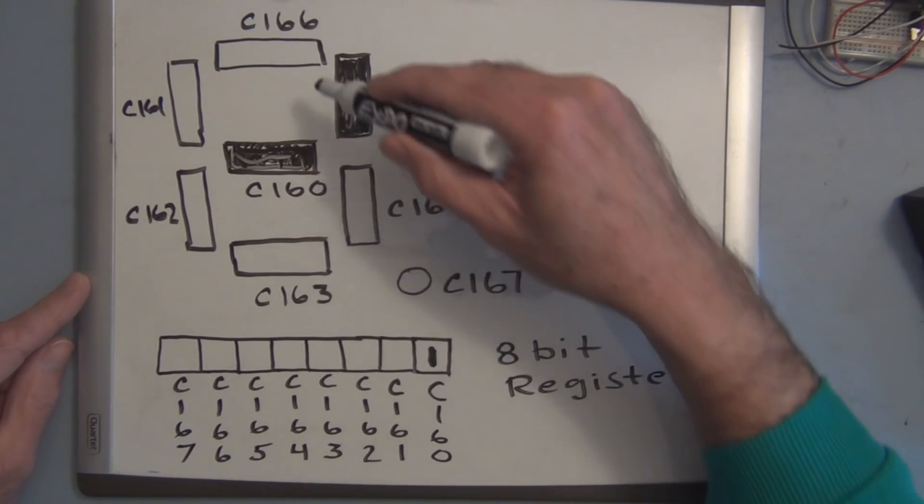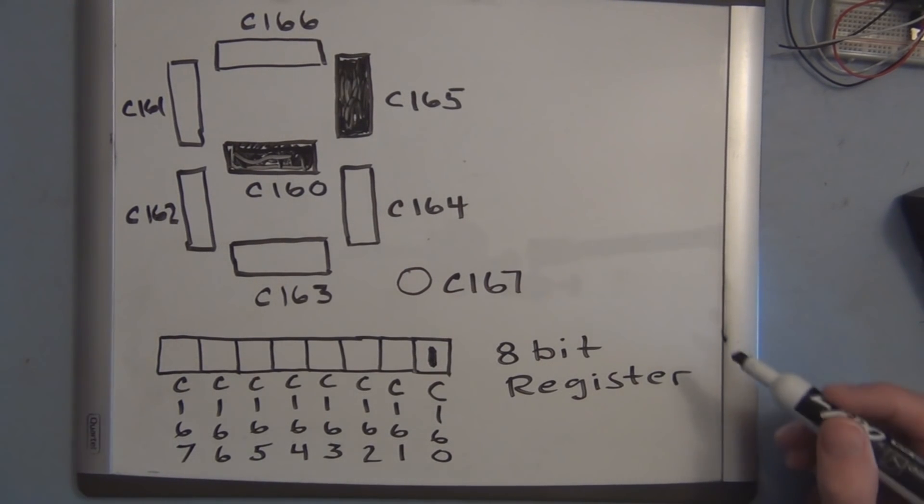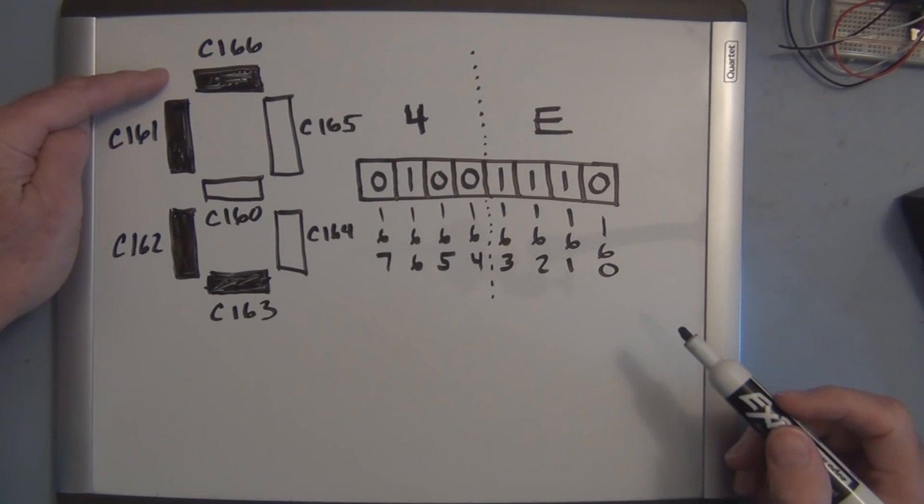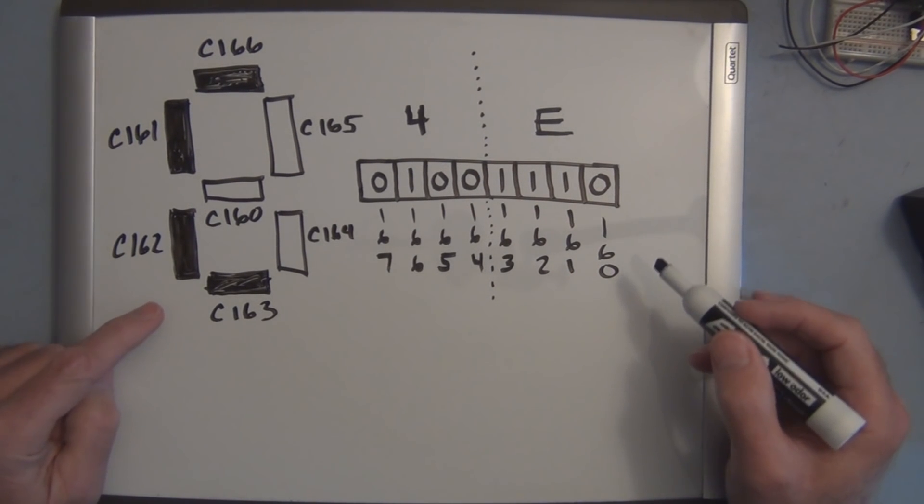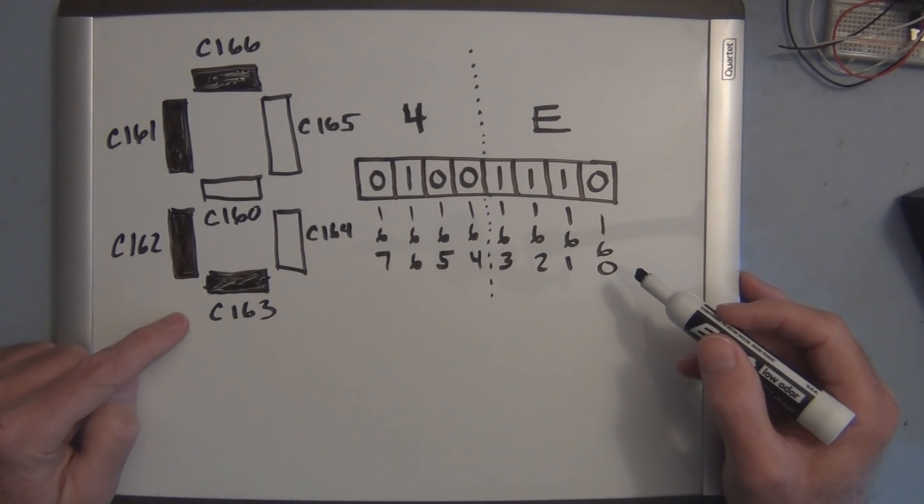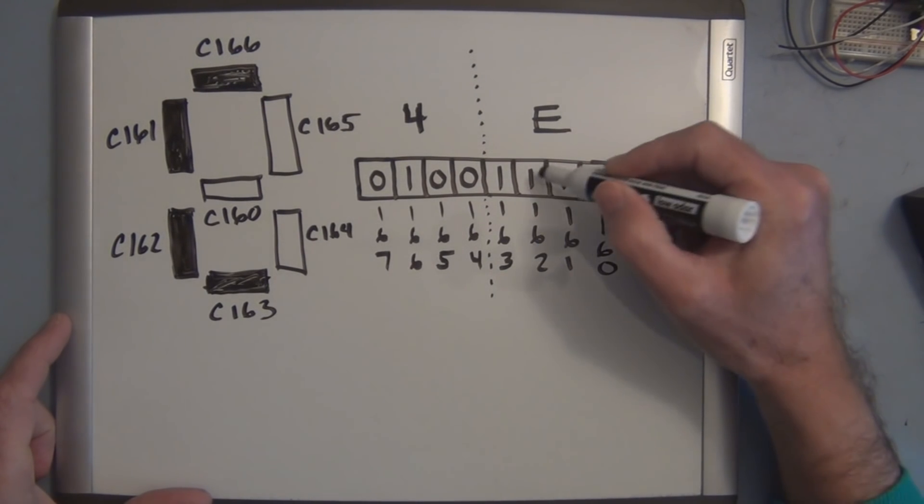Located so that it turns on the segments that you want turned on to form a character. So here, if I want to form the letter C, I have to shift bits into positions C161, 162, 163, and 166 has to have a one in it.